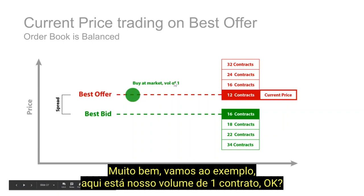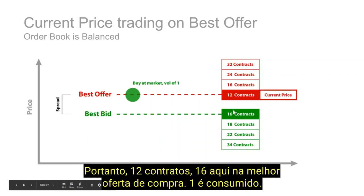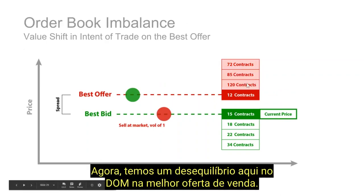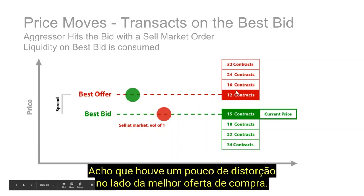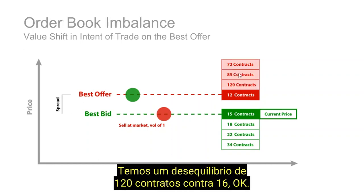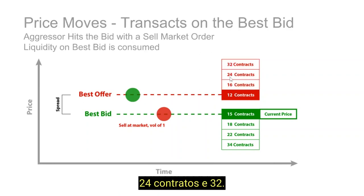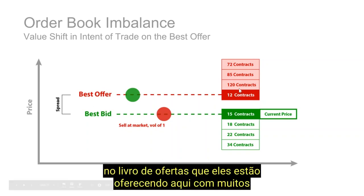Let's go through the example. We have a volume of one hitting the bid. We had 12 contracts on the offer and 16 on the bid — one is consumed and that becomes the current price. Now we have an imbalance in the depth of market on the offer. Previously we had a pretty equal book, but now we have 120 contracts on the offer versus 16 on the bid. We now have a very heavy imbalance in the limit order book — they're offering here with a large contract size: 85 and 72 contracts versus 15 and 18 on the bid.